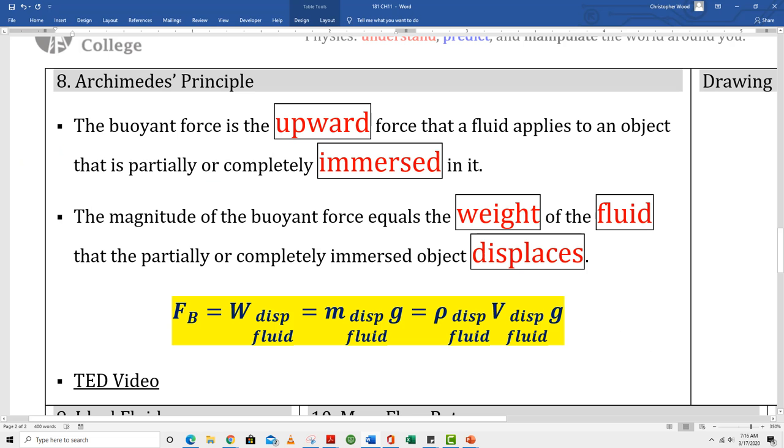Box 8. Archimedes Principle. The buoyant force is the upward force that the fluid applies to an object that is partially or completely immersed in it. The magnitude of the buoyant force equals the weight of the fluid that the partially or completely immersed object displaces.